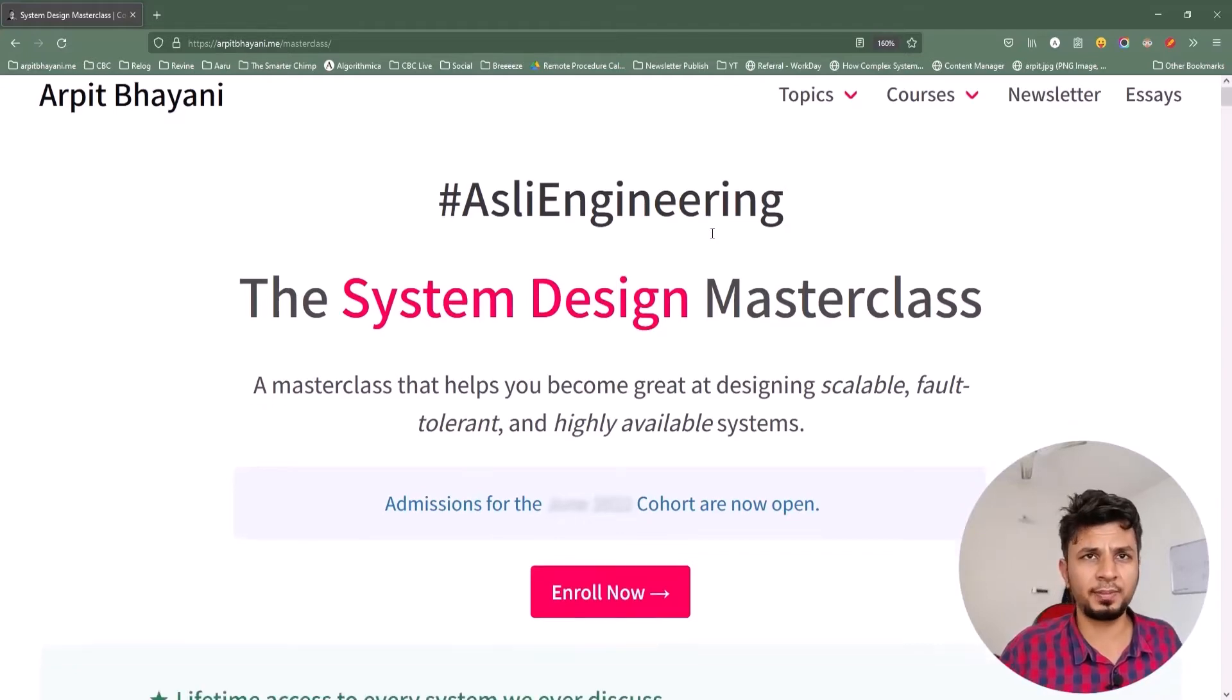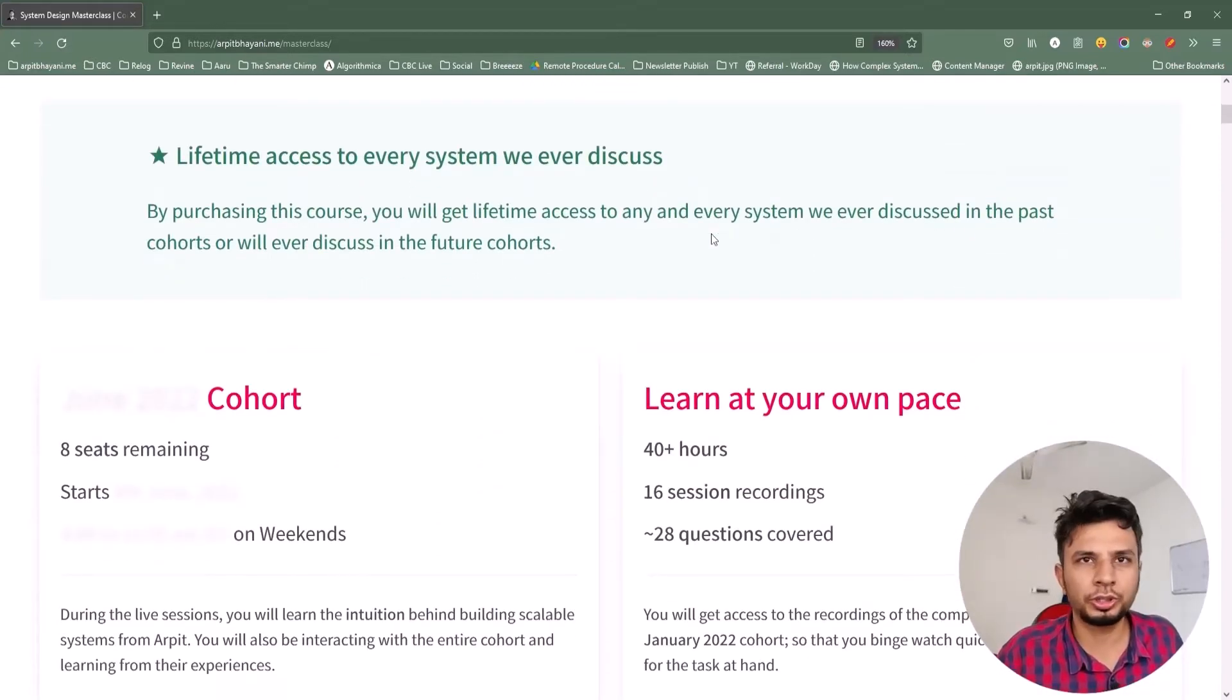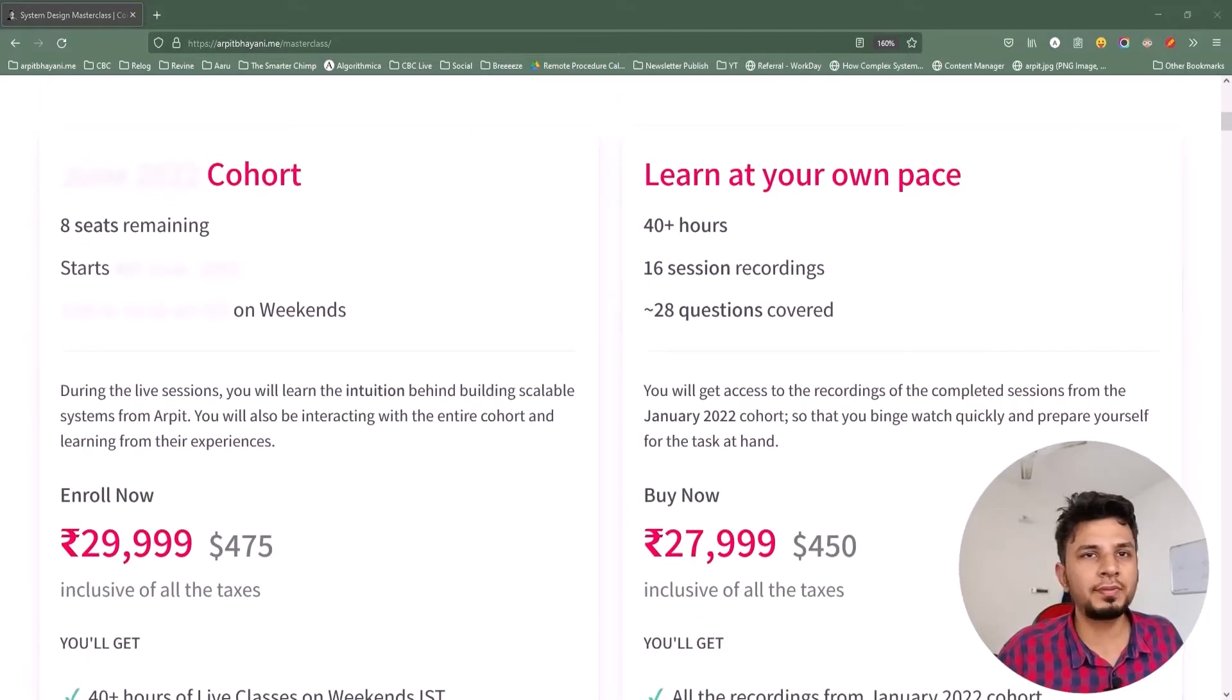So if you are looking to learn system design from the first principles, you will love this course. I have two offerings for you. The first one is the live cohort-based course which you see on the left side, and the second one is the recorded course which you can see on the right side. The live cohort-based course happens every two months and it will go on for eight weeks, while the recorded course contains the recordings from one of the past cohorts as is. If you are in a hurry and want to binge learn system design, I would highly recommend you going for the recorded one. Otherwise the live cohort is where you can participate and discuss things live with me and the entire cohort and amplify your learnings. The decision is totally up to you.